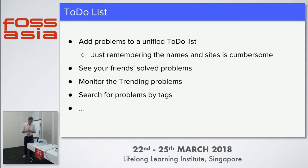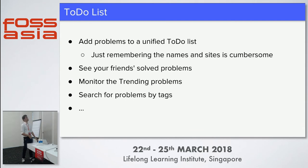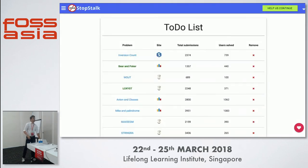Then there is a to-do list. What normally people do is go to every site, remember the problem names, and come back the next day to solve them. This doesn't scale because people would have to stick to a site and remember only a few problems - say two or three maximum. But now you have a unified to-do list across all competitive programming websites. You can add it to the to-do list and come back later on StopStalk to get the problem you need to solve. You can see your friends' solved problems, add them to your to-do list, monitor trending problems every day, and search problems by tag. The page shows problem names, the problem site, and the number of users who solved it. You can also remove from the to-do list when you're done solving.